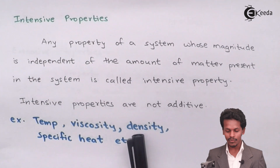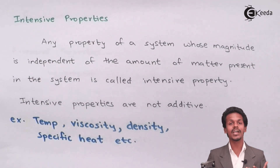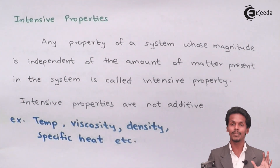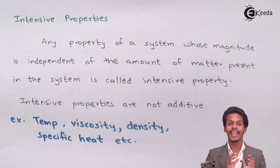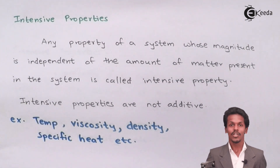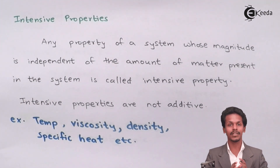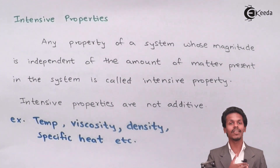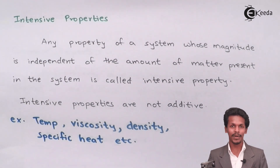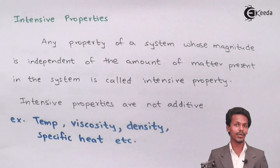Viscosity and density are also two properties which are not dependent on the amount of matter in the substance, and hence they are said to be intensive properties. These two classifications tell us which properties are extensive and which are intensive.